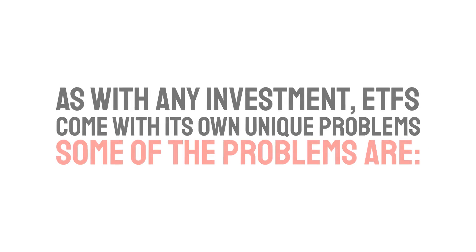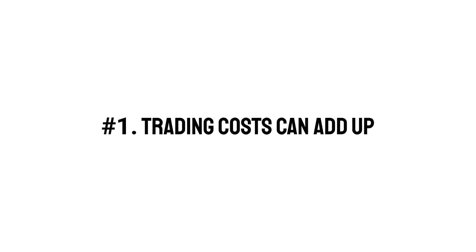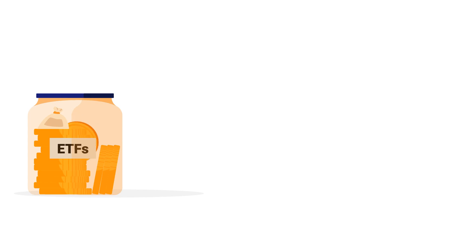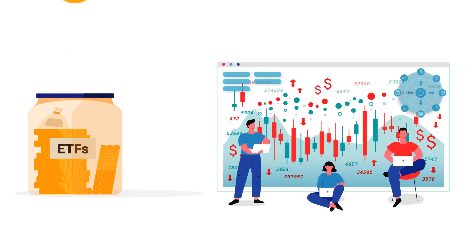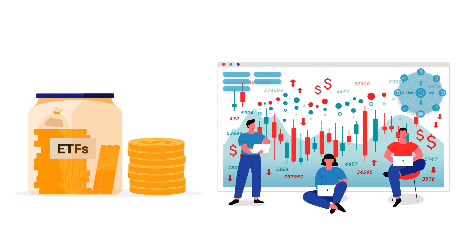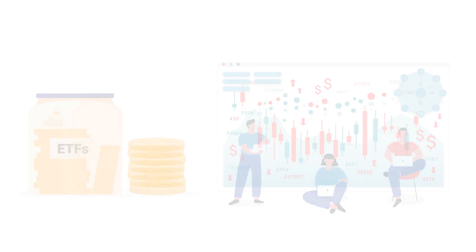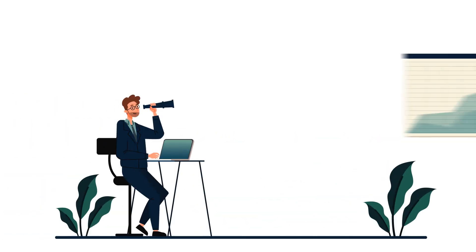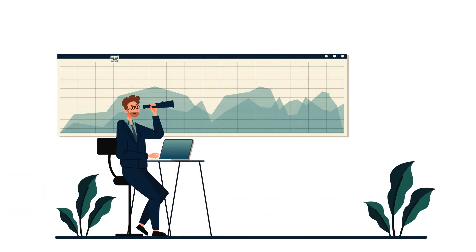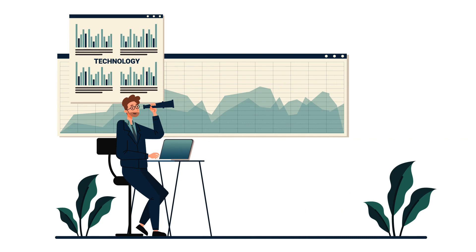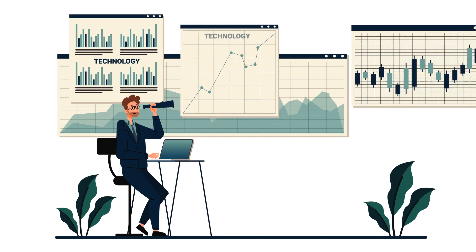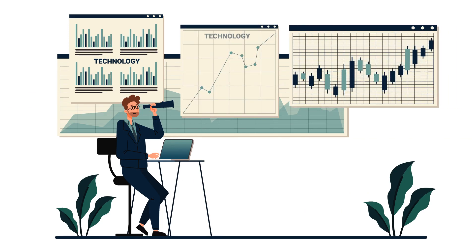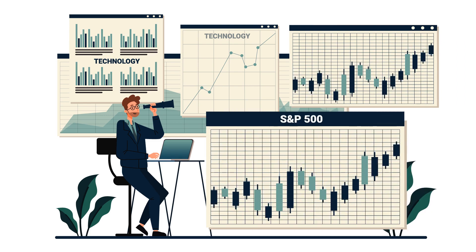Three disadvantages of investing in ETFs. One: trading costs can add up. ETFs sometimes generate a small trading commission every time an investor buys or sells shares. Although the commission fees are low, the costs add up quickly if you're making frequent trades. Two: may be too narrowly focused. Many ETFs track a particular sector, benchmark, or similar niche area of the market, such as technology. Those types of ETFs tend to have wider swings in price than a broader market index such as the S&P 500.